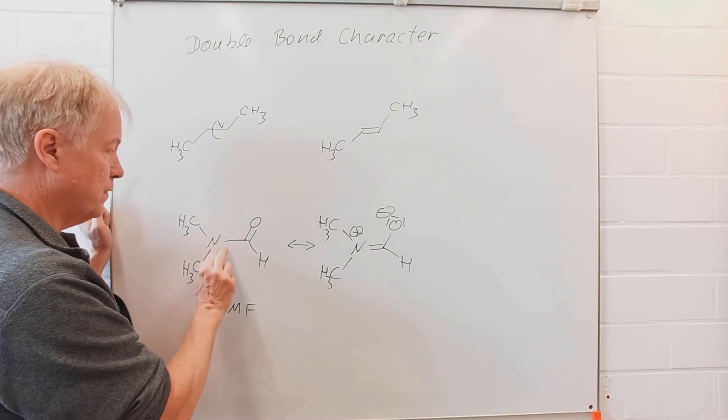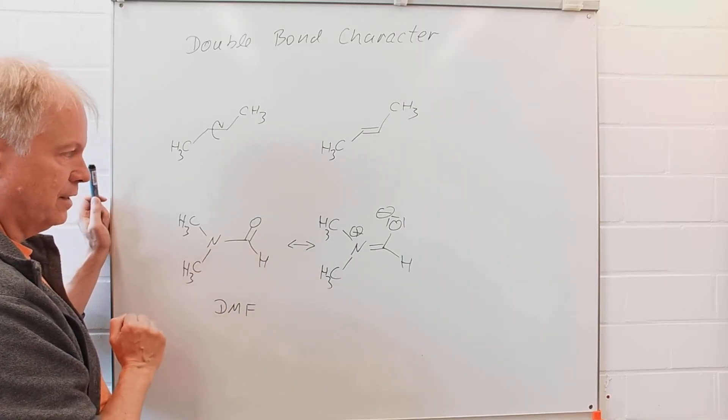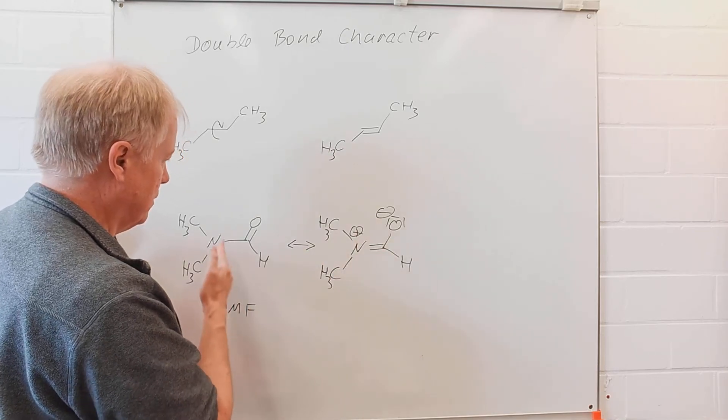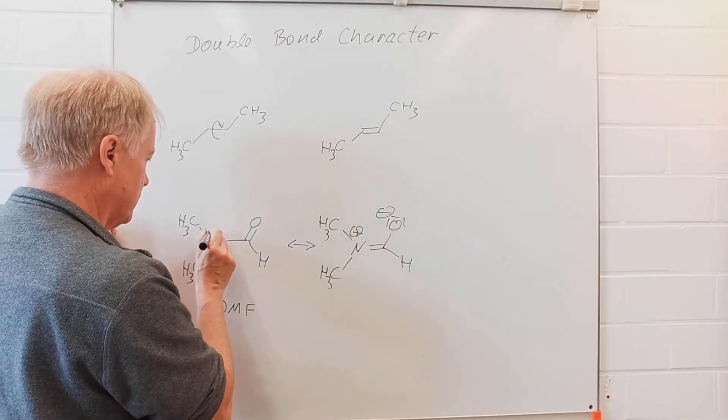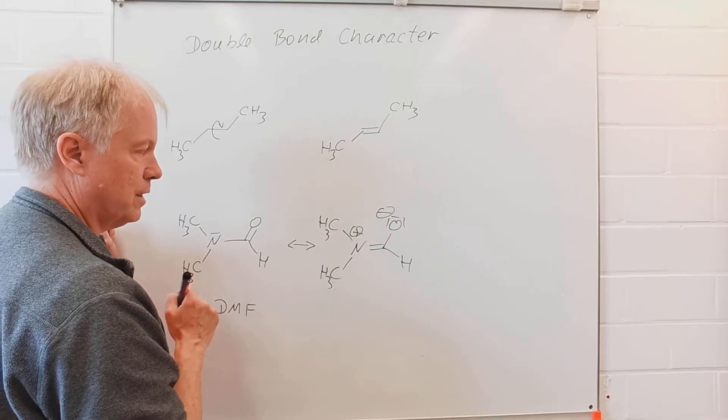We can easily explain that with a partial double bond character, and this is due to a mesomeric interaction between the electron pair of the nitrogen and that carbonyl group.